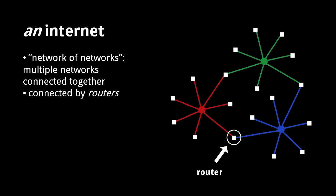In contrast, what we call an internet is a network of networks. These networks are connected together through routers, which are simply systems connected simultaneously to more than one network.